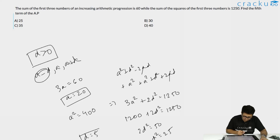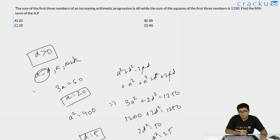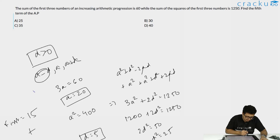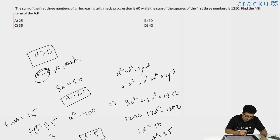Now that we know a = 20 and d = 5, the actual first term is a - d = 20 - 5 = 15. The fifth term is 15 + (5-1)·5 = 15 + 20 = 35. The answer is c.